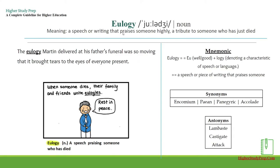Today's first word is eulogy. Eulogy — it's a noun, which means a speech or writing that praises someone highly, or a tribute to someone who has just died. For example, the eulogy Martin delivered at his father's funeral was so moving that it brought tears to the eyes of everyone present. The mnemonic for the word eulogy can be: 'eu,' which means well or good, and 'logi,' which means denoting a characteristic of speech or language. So in short, eulogy can be remembered as a speech or piece of writing that praises someone.